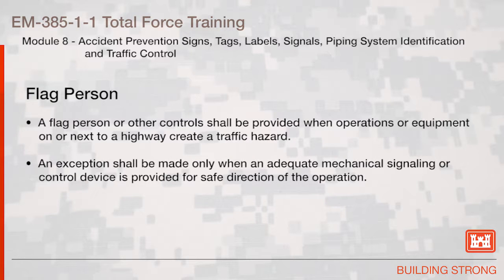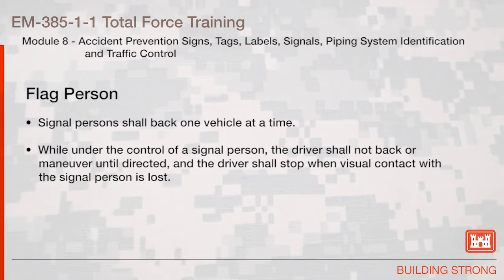A flag person or other controls shall be provided when operations or equipment on or next to a highway create a traffic hazard. An exception shall be made only when an adequate mechanical signaling or control device is provided for safe direction of the operation. Signal persons shall back one vehicle at a time. While under control of a signal person, the driver shall not back or maneuver until directed and shall stop when visual contact with the signal person is lost.